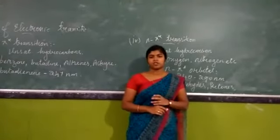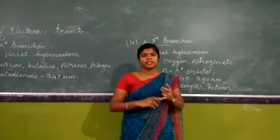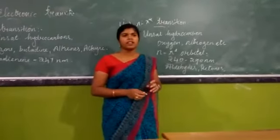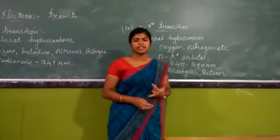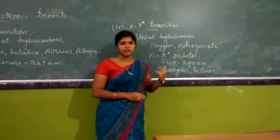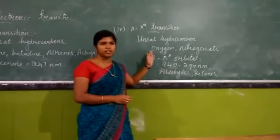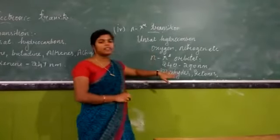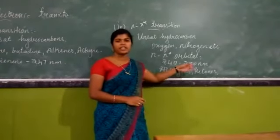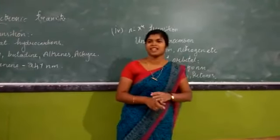Pi to pi star transition is very important for aromatic compounds like benzene and unsaturated hydrocarbons. The last is n to pi star transition, which occurs with unsaturated compounds containing heteroatoms. The heteroatom contains a non-bonding orbital, and this involves transition from the n orbital to the pi star orbital. This occurs at a region of about 270 to 299 nanometers. Such transitions occur with compounds like aldehydes and ketones and require the least amount of energy, but the wavelength is the highest compared to other transitions.